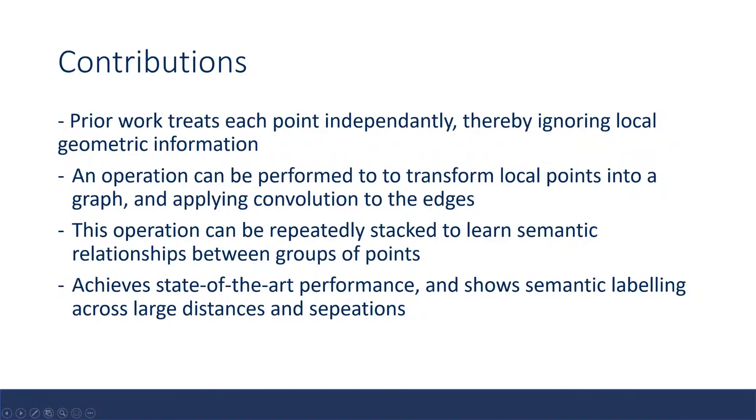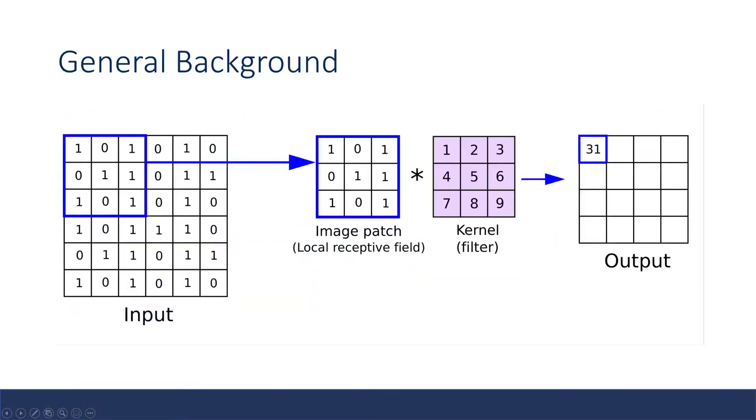This operation of graph convolutions can be applied repeatedly and has good effect, with interesting results especially in creating semantic relationships between groups of points even if their Euclidean distance is large. It also achieves state-of-the-art performance on classification and strong results in part segmentation.